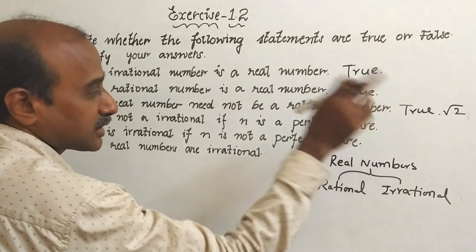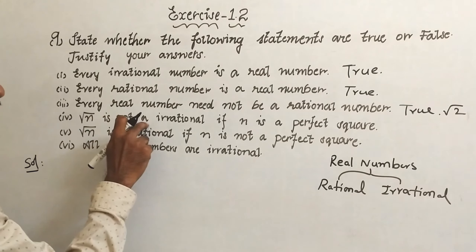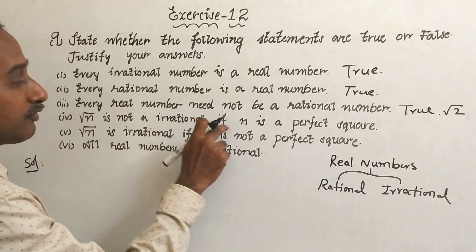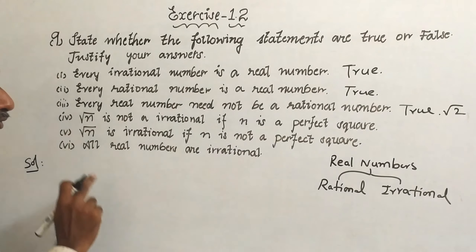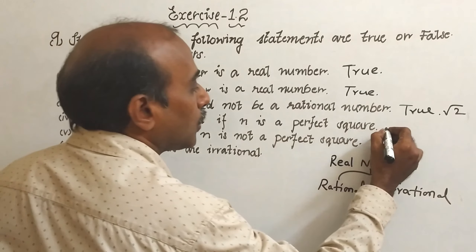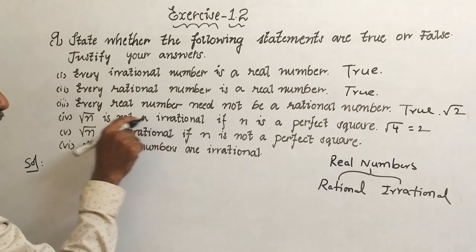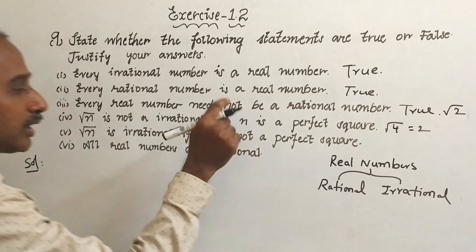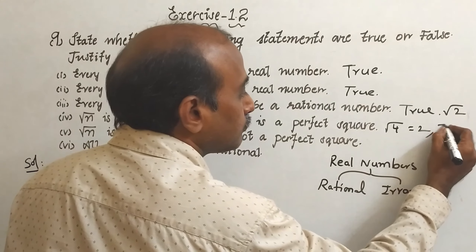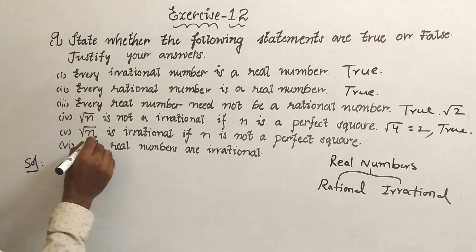For example, root 2 is a real number. Now, for problem 4: if n is a perfect square, take root 4 — its value is 2. So if n is a perfect square, then root n equals 2, which is not an irrational number. Therefore the statement is true.